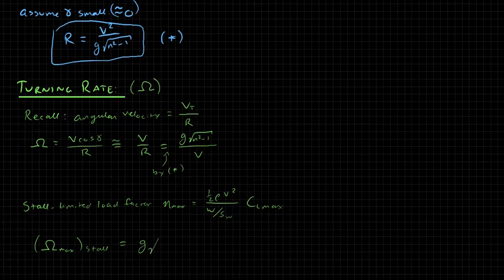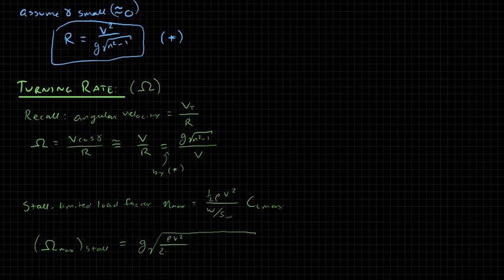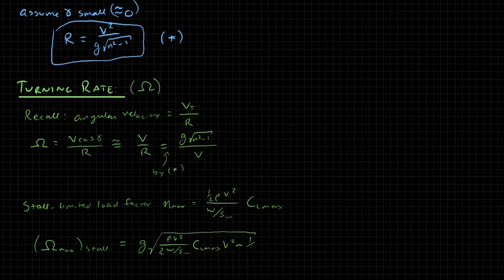So that's going to be G times square root of this guy. I'm going to bring the two down. So we have rho V squared over 2W over SW times CL max times V squared because we have this V here. So it's kind of funny, we're now under the square root, so we have this V squared that comes in. It's going to be minus 1 over V squared. If you're not sure how I got there, I encourage you to just plug this in and try it out.